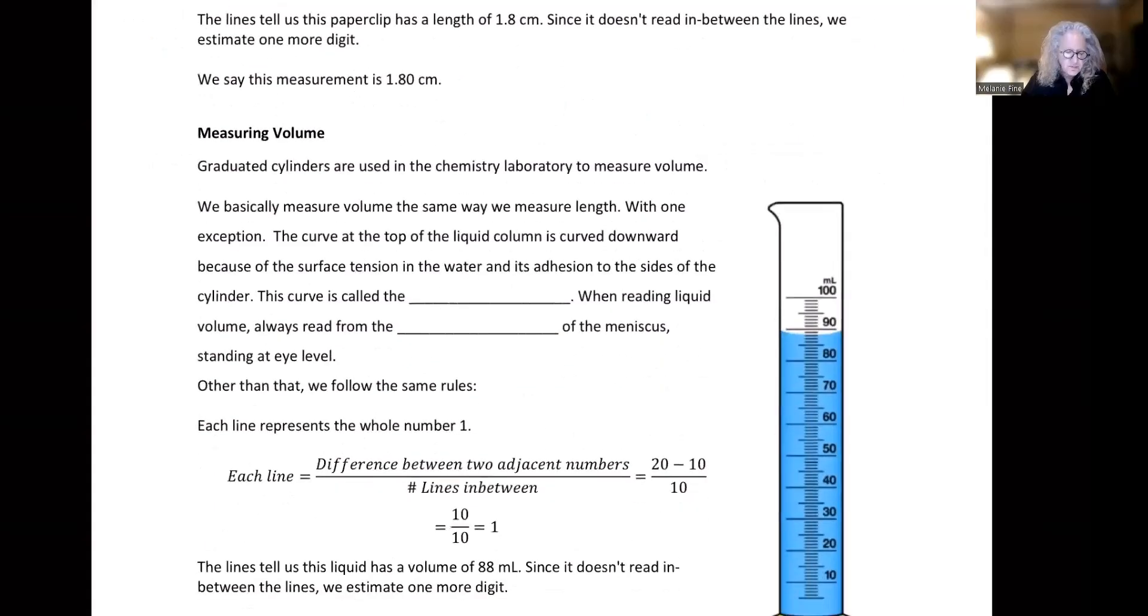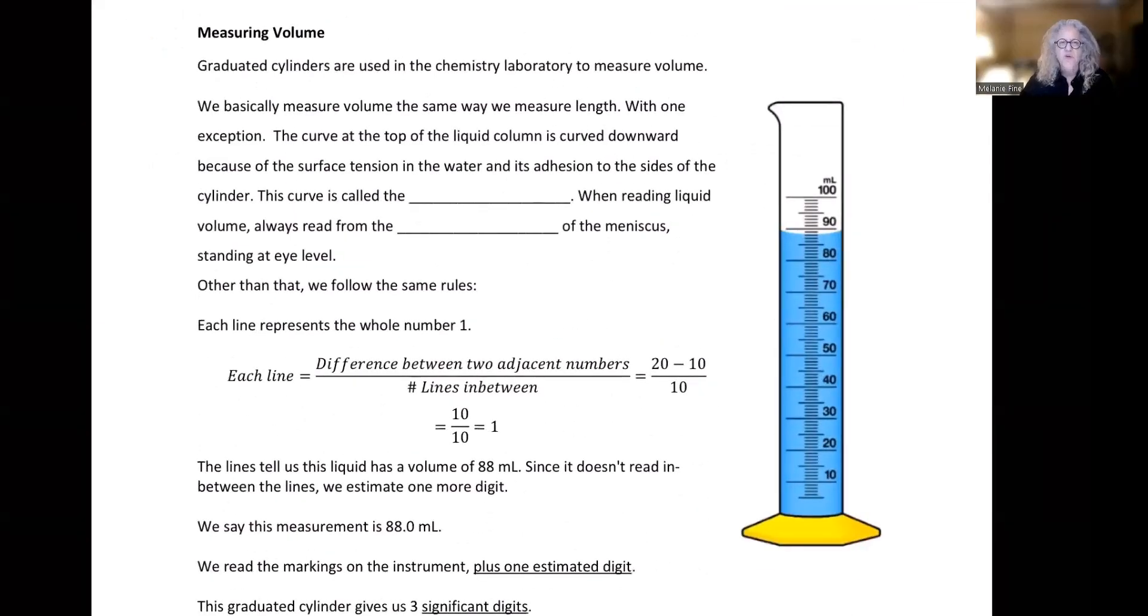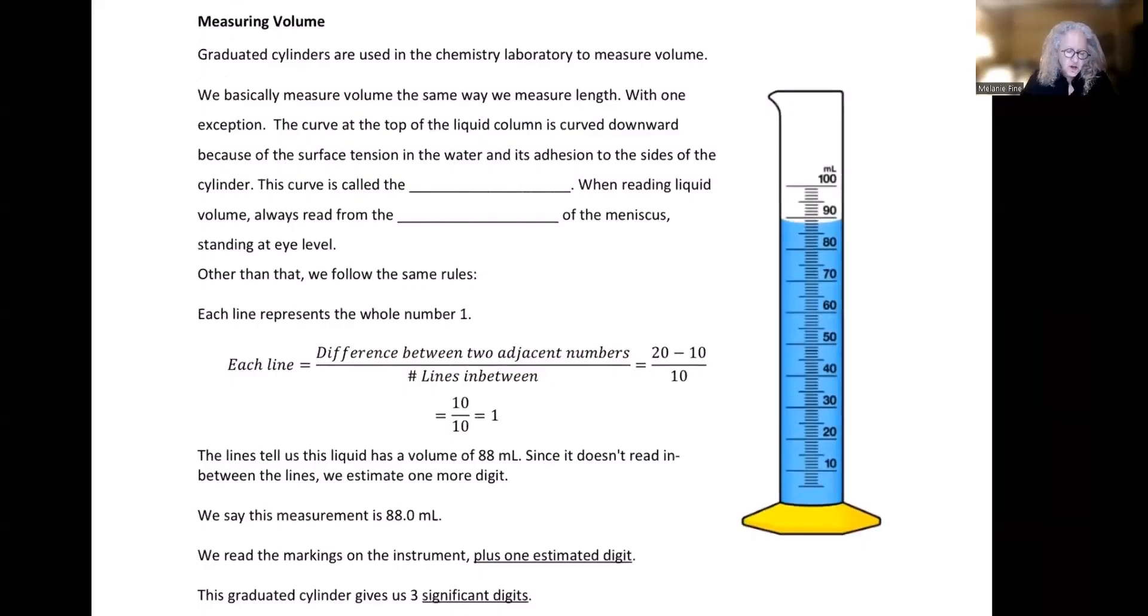Let's move on to measuring volume. We use graduated cylinders to measure volume. We have other ways to measure volume, but this is one of our most tried and true ways. You never measure volume with a beaker. We basically measure volume the same way we measure length, with one exception. There is something at the bottom of this curve called a meniscus. The curve at the top of the liquid column, the level of water is curved downward because of the surface tension in the water and its adhesion to the sides of the cylinder. This curve is called the meniscus.